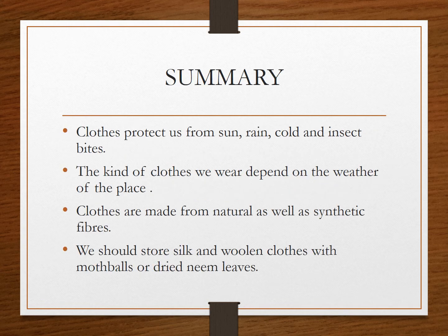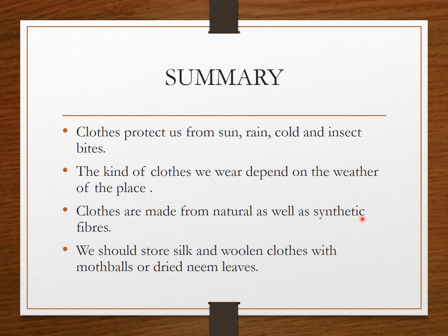Now for the summary of what we have learned in this chapter: First, clothes protect us from sun, rain, cold, and insect bites. Second, we wear clothes according to the place and weather — cotton clothes in summers and woolens in winters. Third, clothes are made from natural as well as synthetic fibers. Last, we should store silk and woolen clothes with moth balls and dried neem leaves.